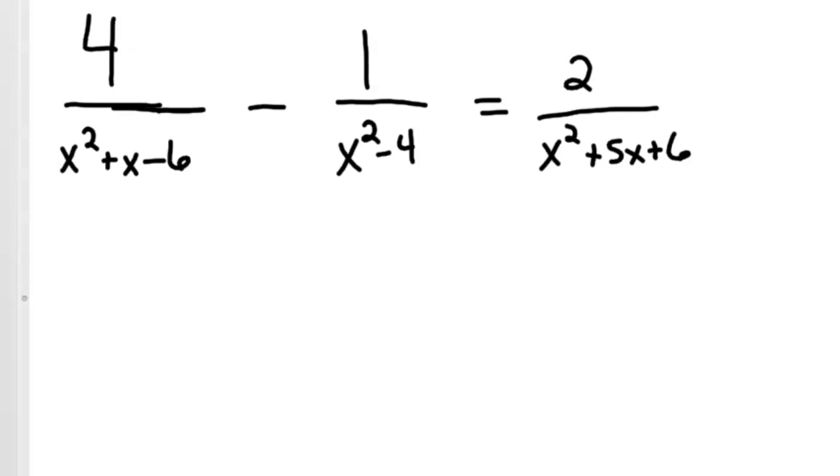Here we go. I apologize for my sloppy handwriting, but hopefully you can read this. We've got 4 over x squared plus x minus 6 minus 1 over x squared minus 4 equals 2 divided by x squared plus 5x plus 6.